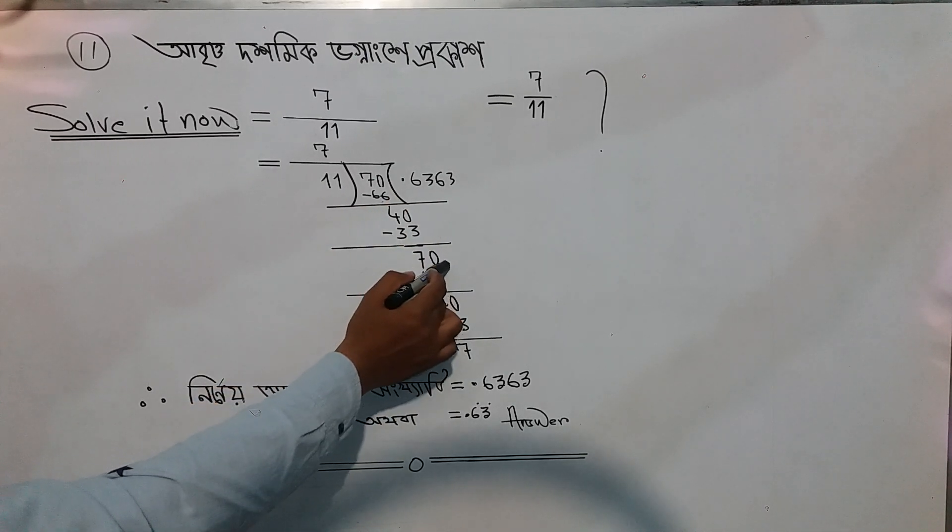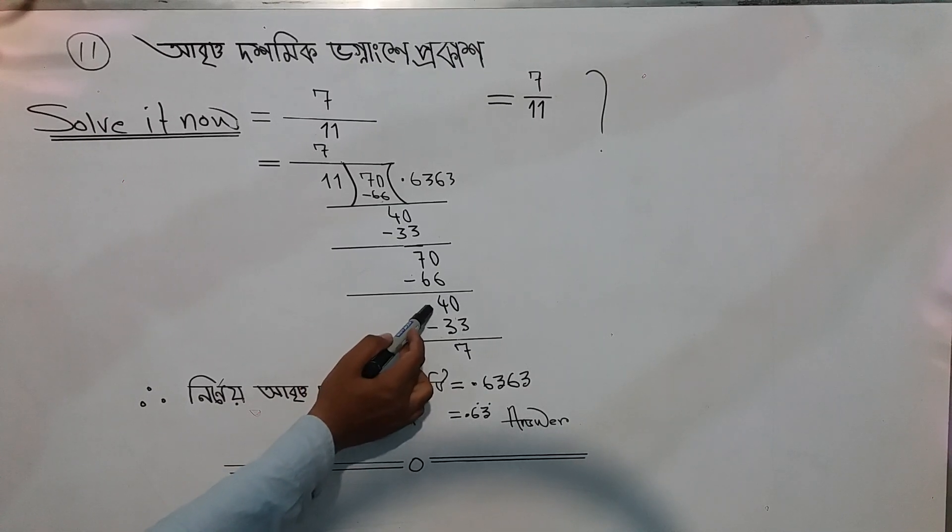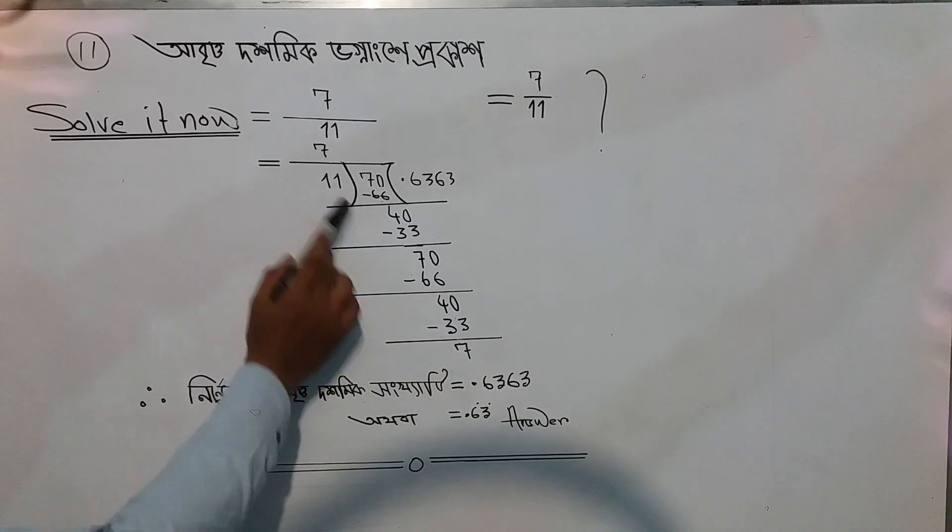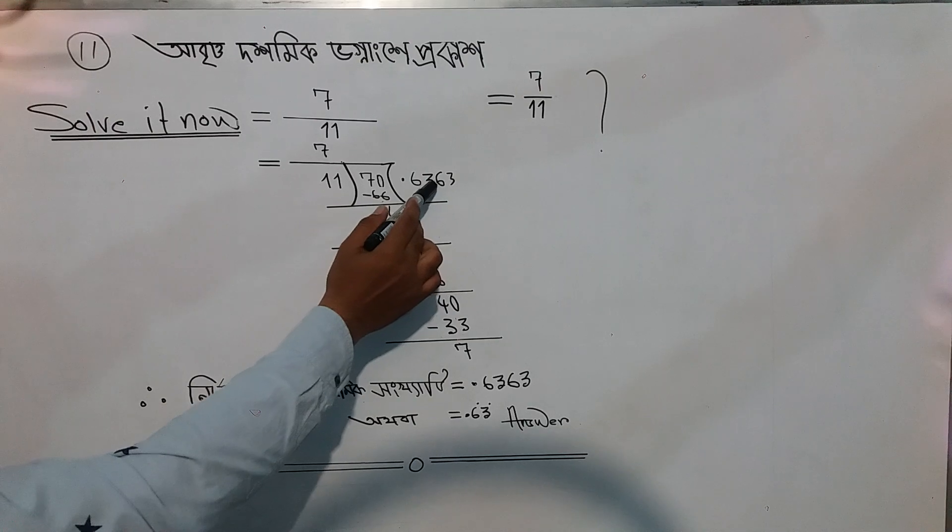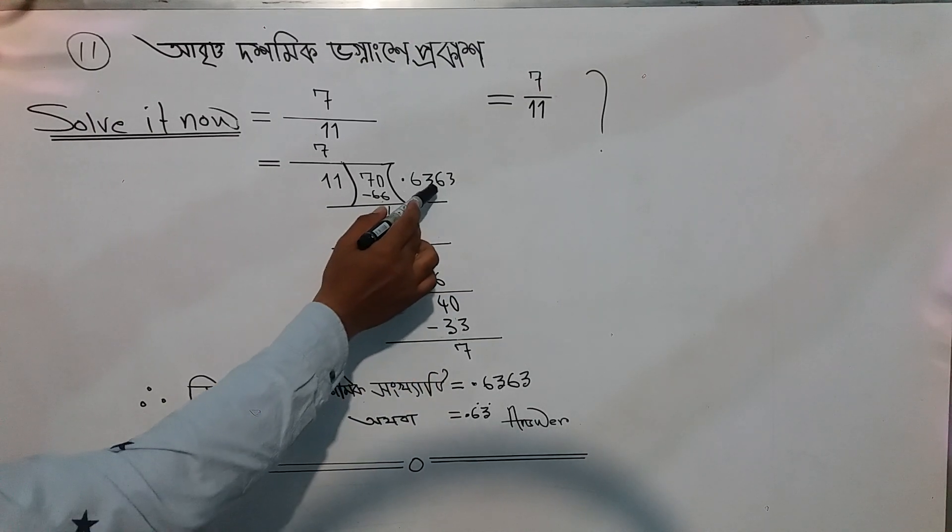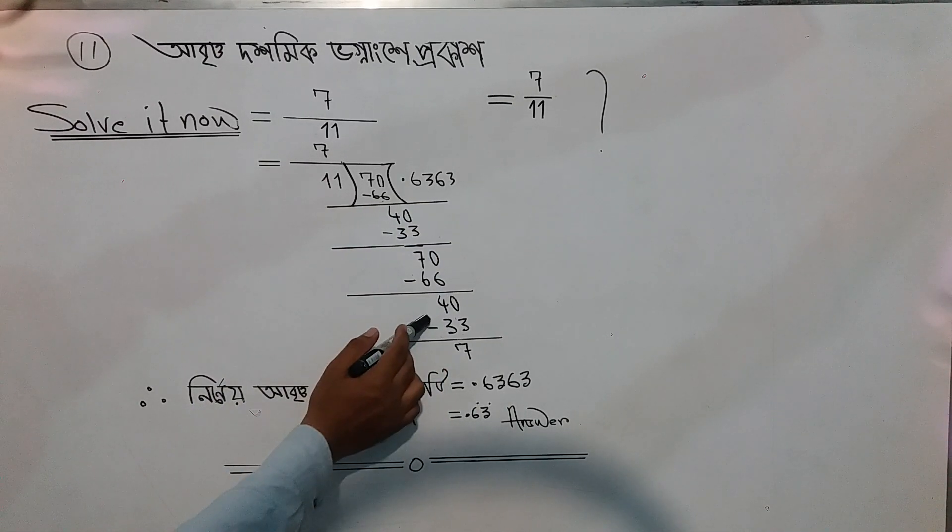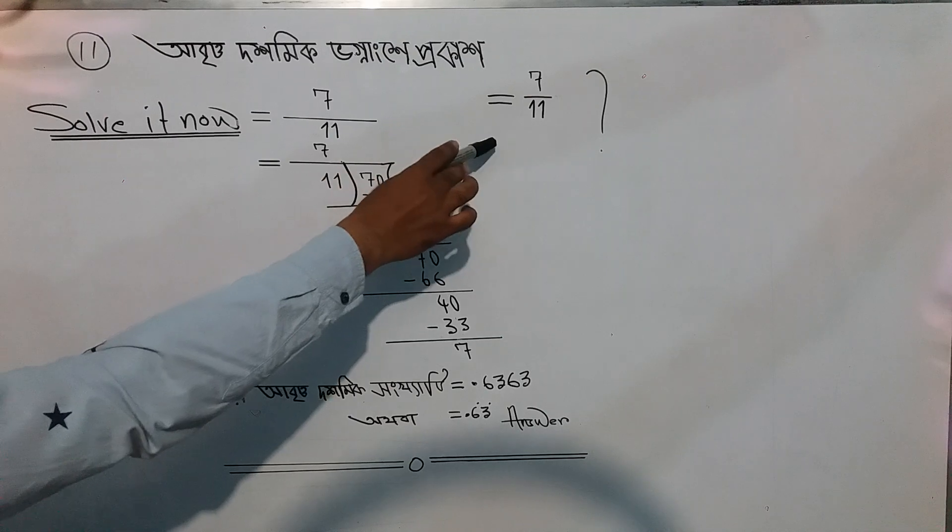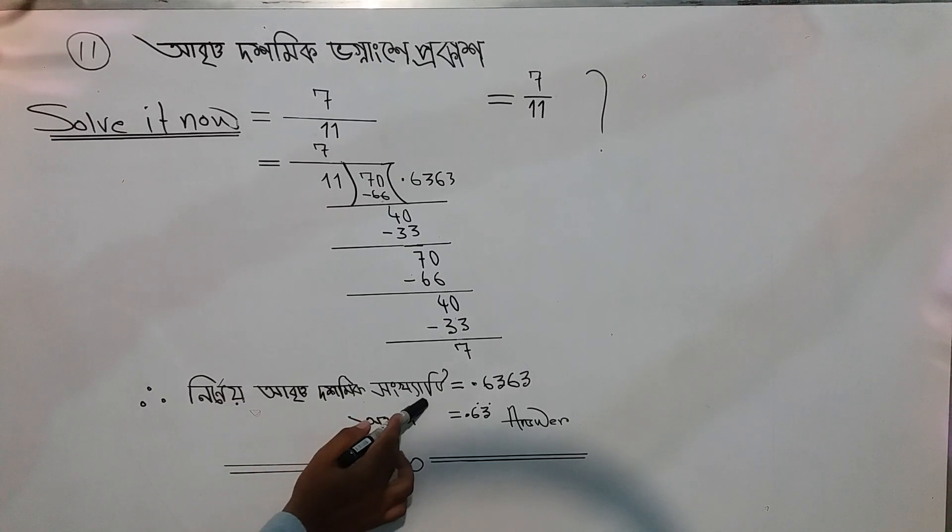So we have ten again, we add zero. Then seventy: sixty-six from seventy gives us four. Add zero again to make forty. Eleven times three is thirty-three, so we have seven again. The pattern is repeating.